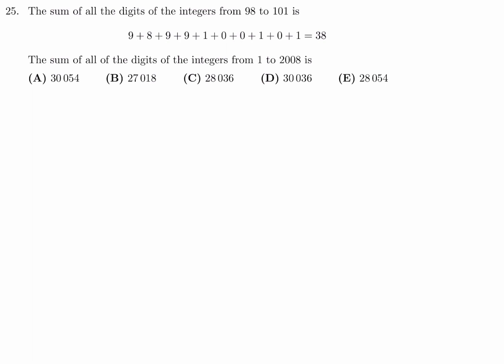The sum of all the digits of the integers from 98 to 101 is 9 plus 8 plus 9, 9, 1, 0, 0, 1, 0, 1, which is 38. The sum of all the digits of the integers from 1 to 2008 is...